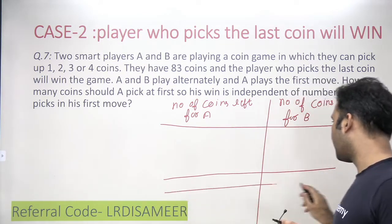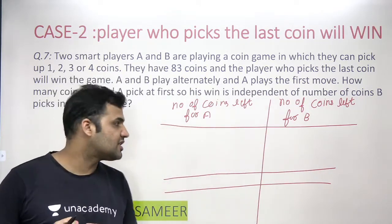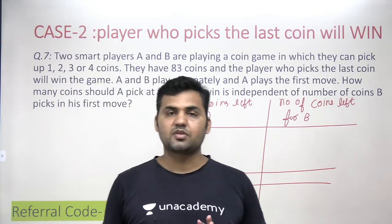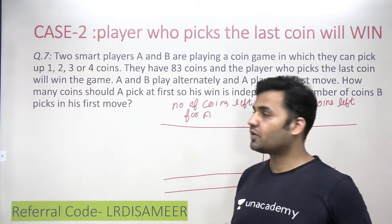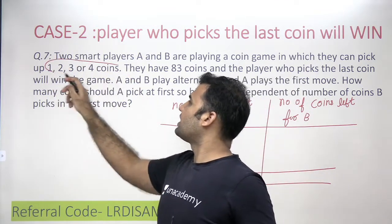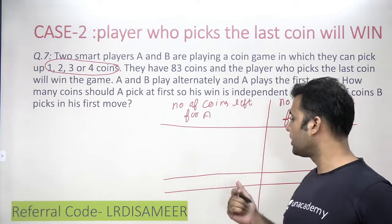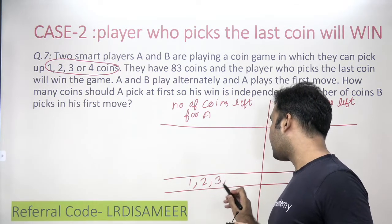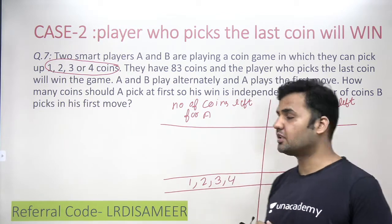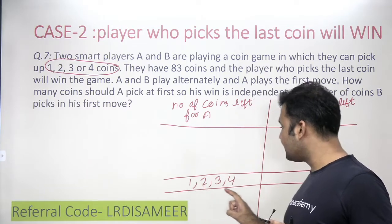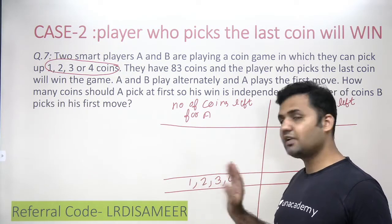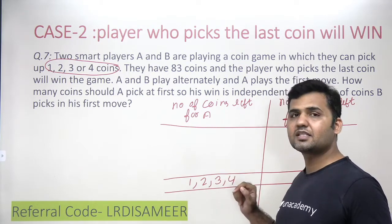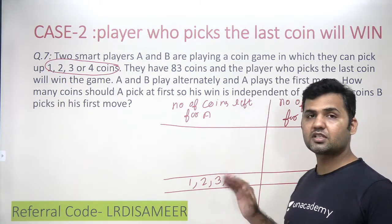We need to start from the last step. If the player picking the last coin is winning, what should be the number of coins A gets in his last turn? A should be getting one, two, three, or four coins on the table. If one coin is on the table, A will pick it and win. If two, three, or four coins are on the table, A will pick them and win the game.